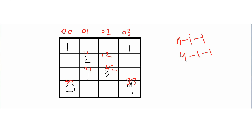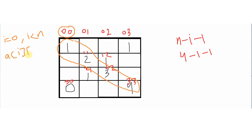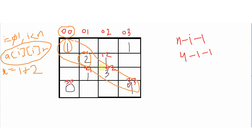For the first diagonal, we make a loop from i equals 0 up to i less than n. In each iteration, we add the element a[i][i] to variable x. When i equals 0 we get a[0][0] which is 1, when i equals 1 we get a[1][1] which is 2, and so on. At last we get the total x equals 10.